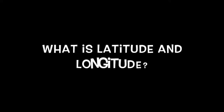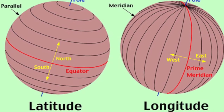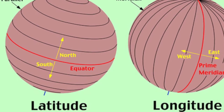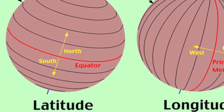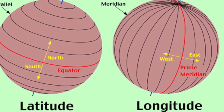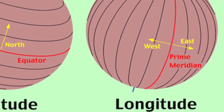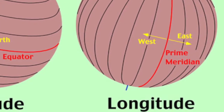What is latitude and longitude? Latitude is the distance in degrees north or south of the equator. Longitude is the distance in degrees east or west of the prime meridian.